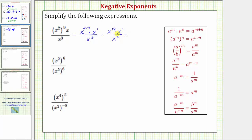Two times nine is equal to 18, so we have x to the eighteenth times x, or x to the first, all over x to the third. Now in the numerator we multiply — when multiplying with the same base, we add the exponents. This is equal to x raised to the power of 18 plus one, all over x to the third, which is equal to x to the nineteenth, all over x to the third.